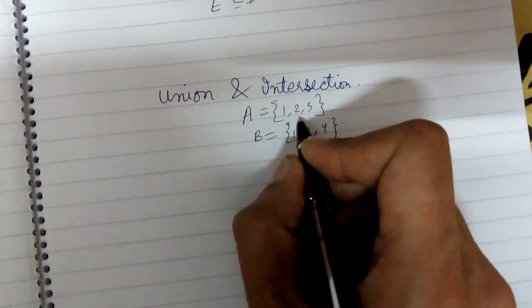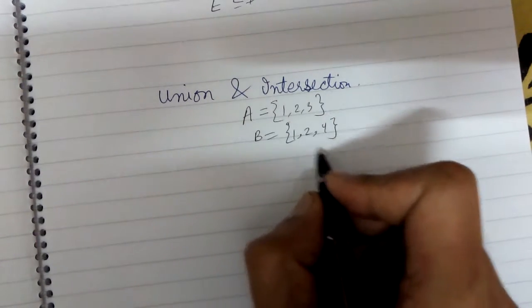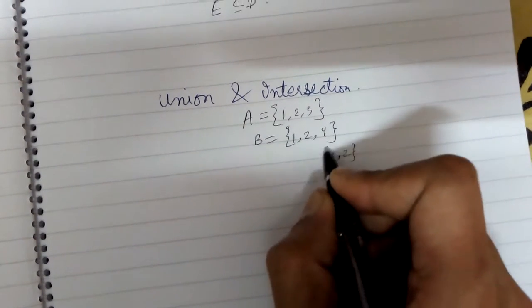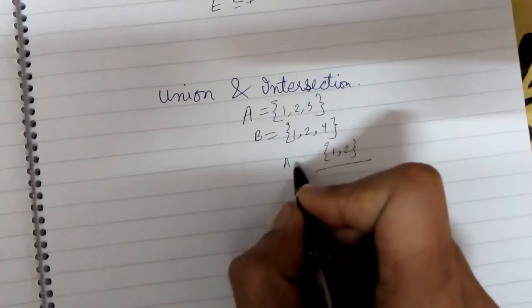Then the intersection of these two is 1, 2, that is the set of common elements between them.